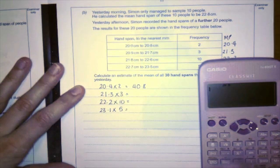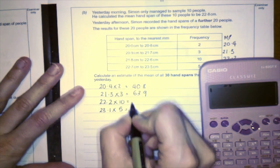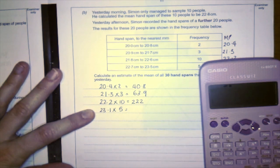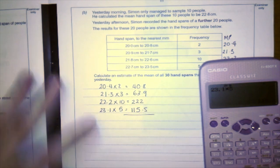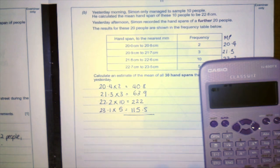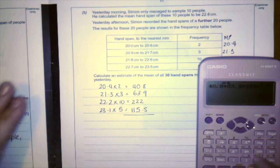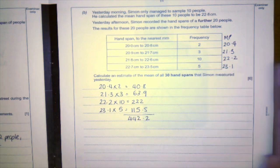and 23.1 times 5. So this is 40.8. This would be 63.9. This would be 222. And the last one, I'll double check on here, will be 115.5.